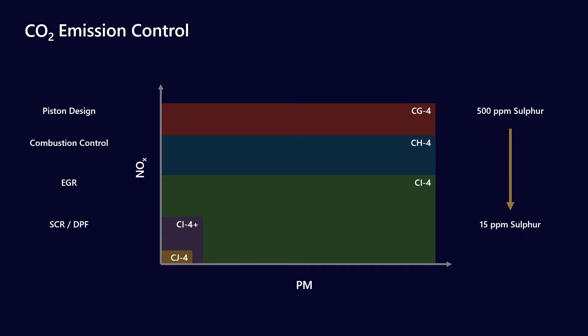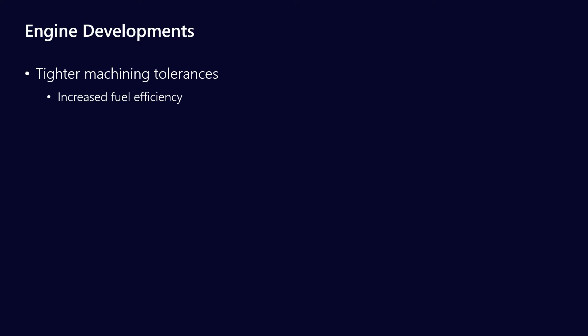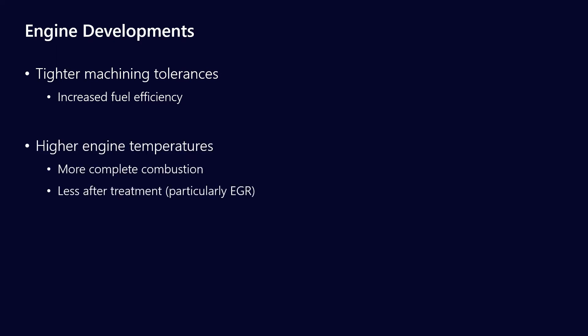These changes didn't happen in a vacuum — they also went along with changes in engine technology. Some of the newer engine developments have been things like tighter machining tolerances, which can help increase fuel efficiency, as well as running engines at much higher temperatures, which helps with the completeness of combustion. This means we get more effective energy out of a unit of fuel, which increases fuel efficiency and helps with tailpipe emissions because we need less after-treatment.